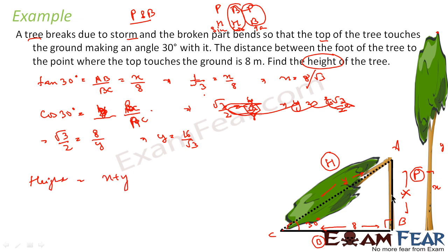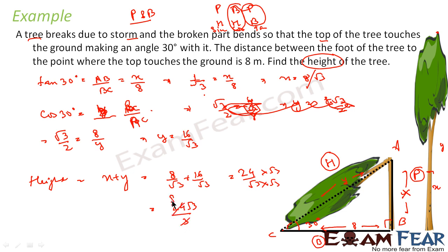The height of the tree is x + y = 8/√3 + 16/√3 = 24/√3. Rationalizing by multiplying by √3/√3 gives 24√3/3 = 8√3 meters. The total height of the tree is 8√3 meters. The key steps are: draw the diagram, draw the triangle, find the sides, and then find what the question asks for — in this case, the height of the tree is x plus y.